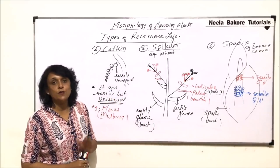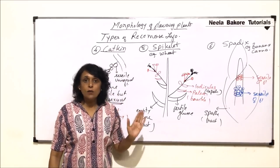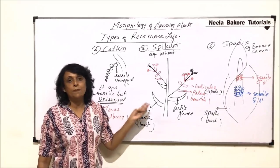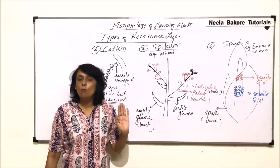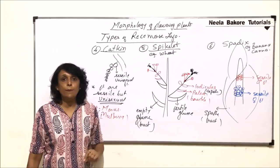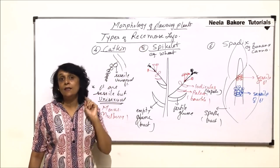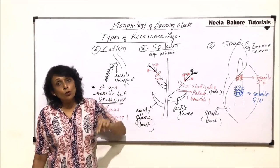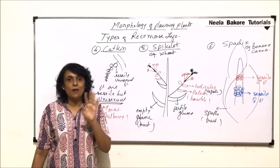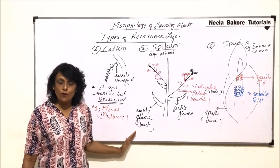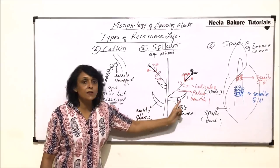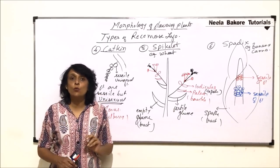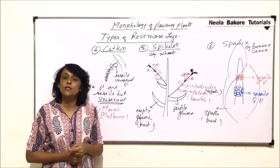In the six types of racemose inflorescence seen so far, the main axis is continuously growing and long, with acropetal arrangement of flowers — whether pedicellate or sessile — and the axis is monopodial. In the next two types, the main axis remains short but continuously grows. In the last two, the main axis becomes flattened. So there are a total of ten types of racemose inflorescence; six have been discussed, two have a short main axis, and two have a flat main axis. The remaining four types will be taken up in the next part.